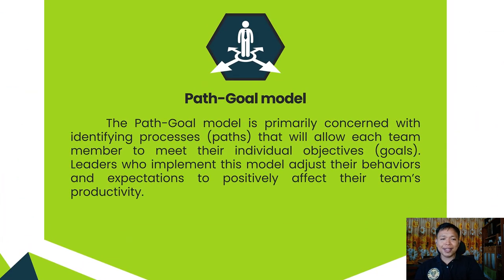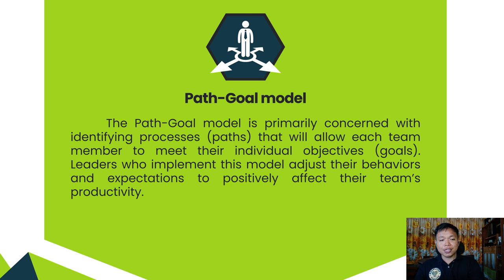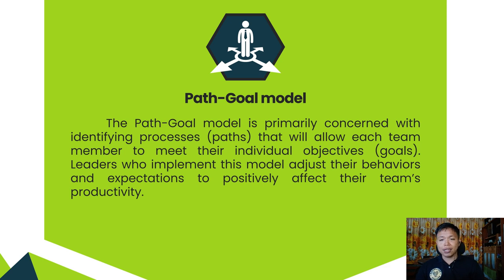The third model is the path-goal model. The path-goal model is primarily concerned with identifying processes or paths that will allow each team member to meet their individual objectives or goals. Leaders who implement this model adjust their behaviors and expectations to positively affect their team's productivity. This model requires the leader to be extremely flexible in their leadership style. They will have to find a way to meet each team member's specific needs to assist them in reaching their daily or weekly goals.